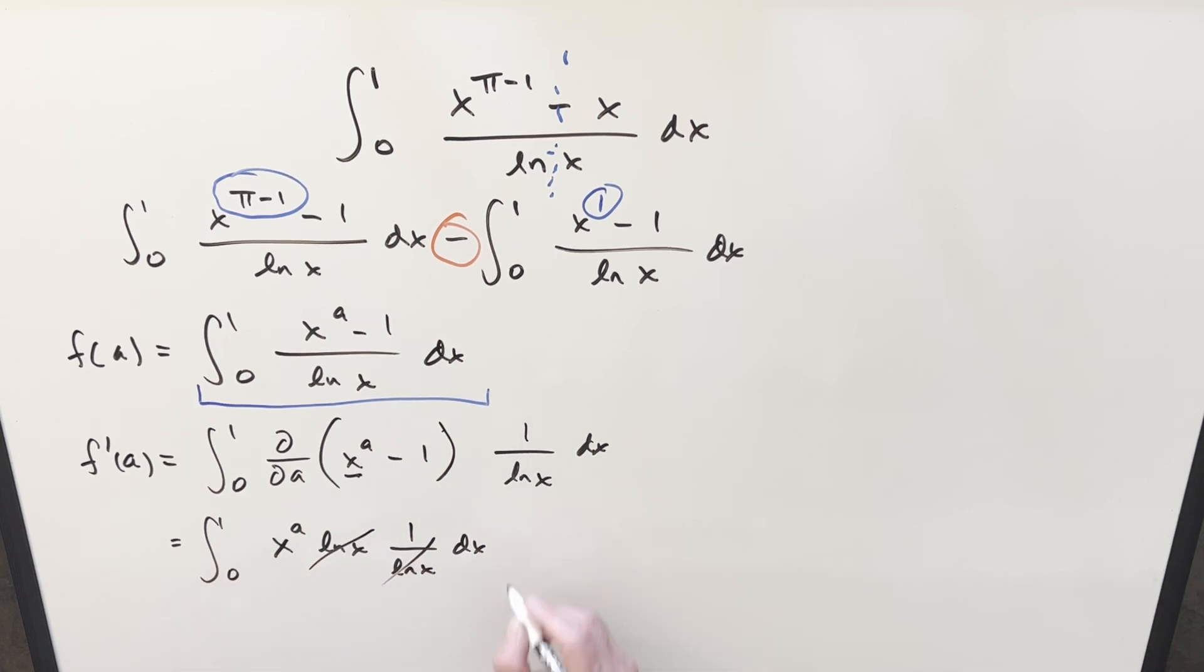We can just do this with power rule. So we'll go ahead, integrate this. A is a constant now. So we do this, we get x to the a plus 1 over a plus 1 evaluated from 0 to 1. Plugging in 1, we end up with just 1 over a plus 1. Plug in 0, that's just going to be 0. So we'll leave that off. And we have our value here for f prime of a.